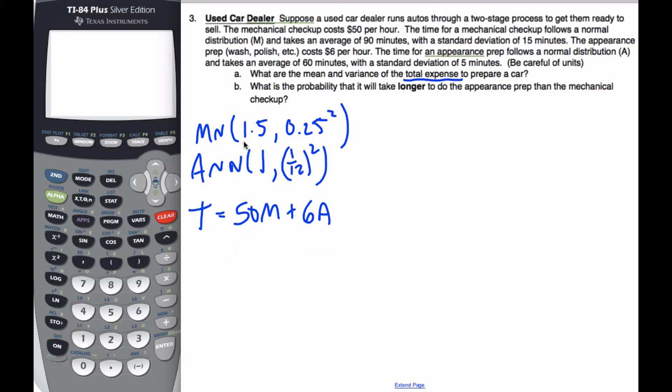And so A and M are normal, so I also know that T is also going to be normal. And its expected value is going to be, if I do expectation all the way through here,